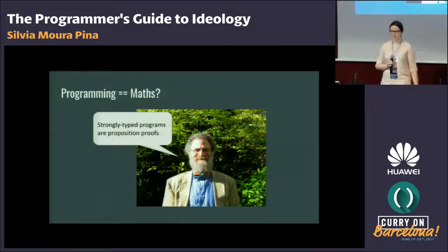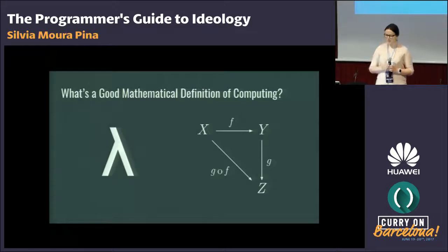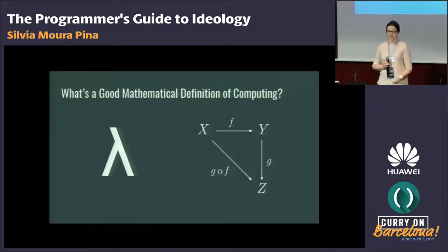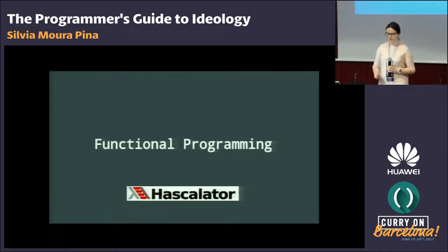So why not consider looking at math for good programming discipline? Is programming a mathematical discipline? Some believe this is the case. What would be a good mathematical definition of computing? Many of us would go for lambda calculus and category theory. But I won't go into mathematics much today, because I'm not a mathematician either. Instead, the closest we can get to designing our codebases like math is through functional programming.